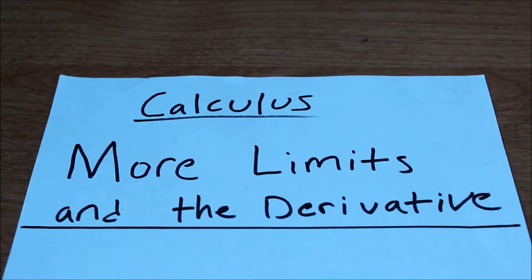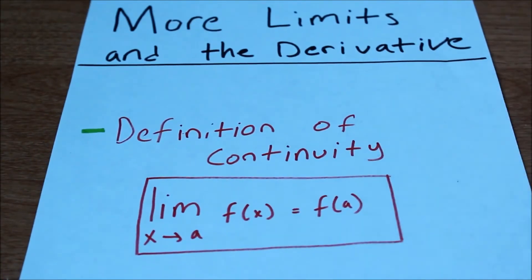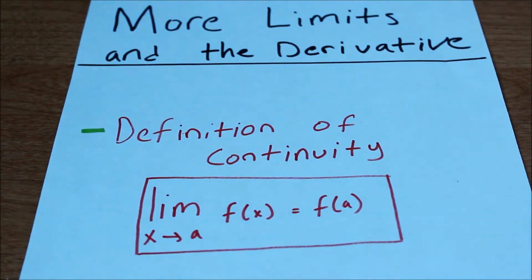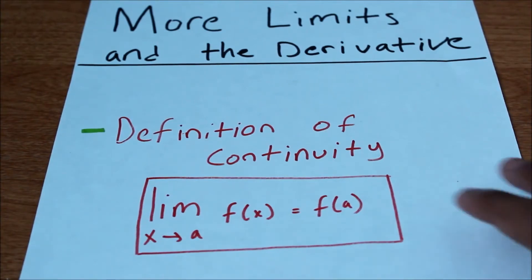First, I want to talk about a definition that I didn't talk about in my last video. It's known as the definition of continuity. Essentially what it states is that if a function is continuous, then the limit as x approaches a of f of x equals f of a. So if it's continuous, the limit of f of x will equal f of a as x approaches a. If you didn't understand that, let's take a look at a graph.